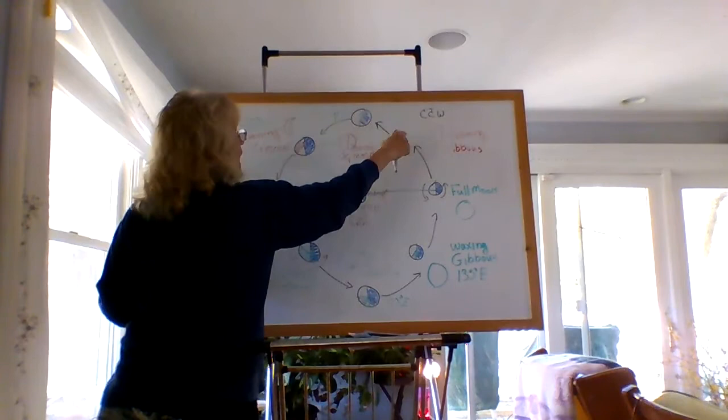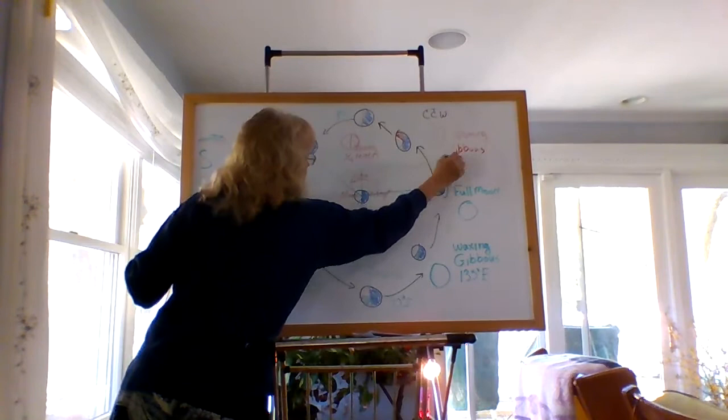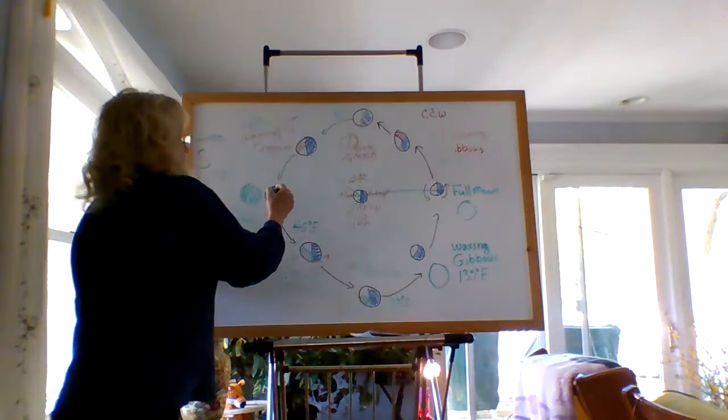The full moon is 180 degrees, neither east nor west. The new moon is 0 degrees, so I'll just put those down.